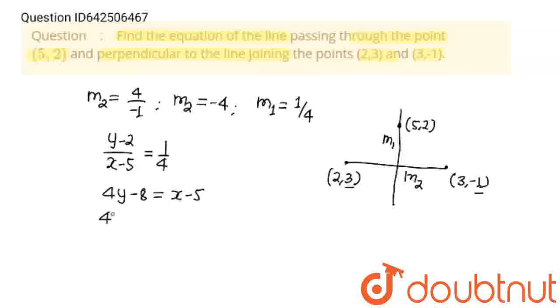And I will bring both terms to this side. We will get 4y minus x minus 3 is equal to 0, and this is our final answer.